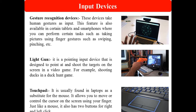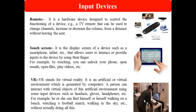With gesture recognition, you can perform tasks such as taking pictures by moving your hand in front of the camera. Next is the light gun, a pointing input device used to shoot targets on the screen in video games — for example, shooting ducks in the Duck Hunt game. Next is the touchpad, which you can see on all laptops; the touchpad is used to give input to the computer. Next is the remote control, used with smart TVs, digital TVs, and laptops.